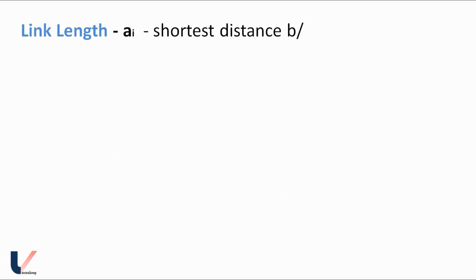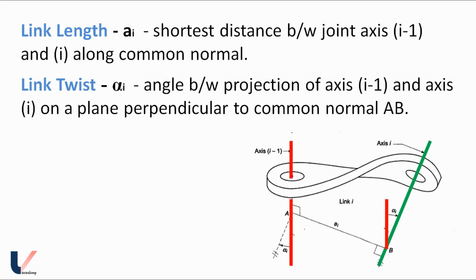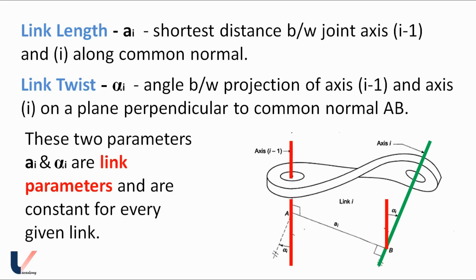Every joint of a manipulator has an axis. A link has axis i−1 and axis i at both its ends. The common normal ab to these two axes meets each axis at 90 degrees. The length of this common normal between the two axes is known as the link length, denoted by aᵢ. The second parameter is link twist αᵢ, which is the angle between the projection of axis i−1 and axis i. These two parameters aᵢ and αᵢ are link parameters and remain constant for every given link.